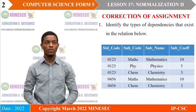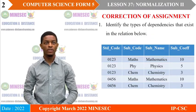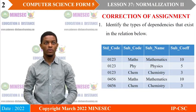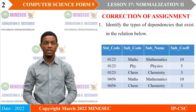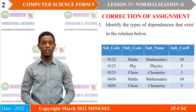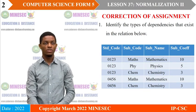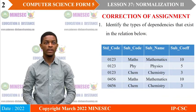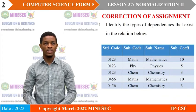Let us start by correcting the assignment of the previous lesson. We are asked to identify the types of dependencies that exist in the relation below. So we have a relation and we are asked to identify the type of dependencies that exist.